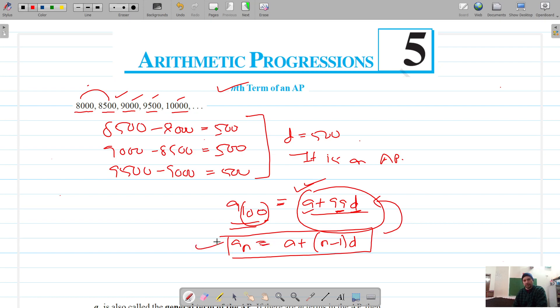This is the formula for the nth term. The nth term means if you have to find any term from the given list of the AP, we can use this formula. Suppose we have to find the hundredth term, the hundredth term would be a plus 99d. If you put in the value, a is 8000 plus 99 into 500, that should give us the hundredth term of this AP.